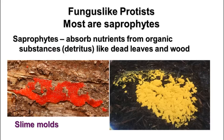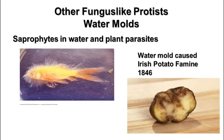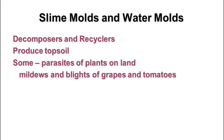The fungus-like protists include slime molds and water molds. Most are saprophytes, absorbing nutrients from dead organic material like leaves and wood. Slime molds live in damp, forested areas and are often very bright colors. Water molds are saprophytes in water and also some are plant parasites—if a fish dies in your aquarium and grows fuzzy stuff, that's a water mold. A particular water mold caused the Irish potato famine in 1846. Many are decomposers and recyclers of nutrients, and some are parasites of plants like mildews and blights.